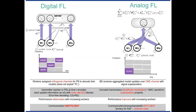Beyond the orthogonal versus non-orthogonal perspective, in the digital case every client encodes its model using a given coding rate and finds the transmit power accordingly. This does not take advantage of the fact that in FL you are interested in the model average, not the individual model. In contrast, for analog FL, we leverage the fact that we are interested in the model average, using the multiple-access channel's superposition property — the channel helps you average the model among all clients. Performance improves as you increase the number of workers in the analog case, whereas in the digital case performance actually goes down.